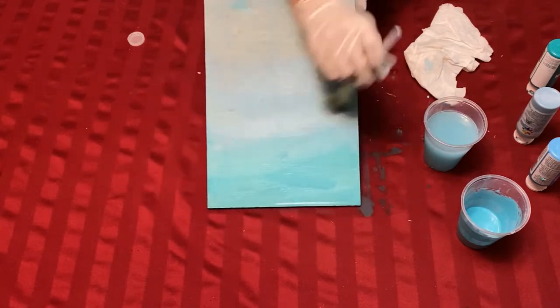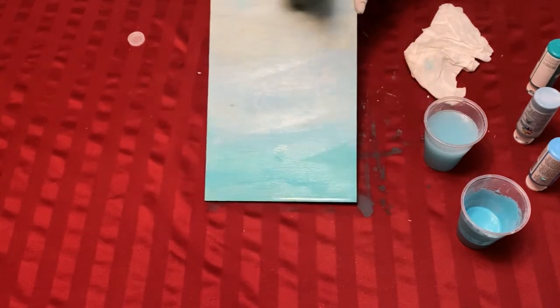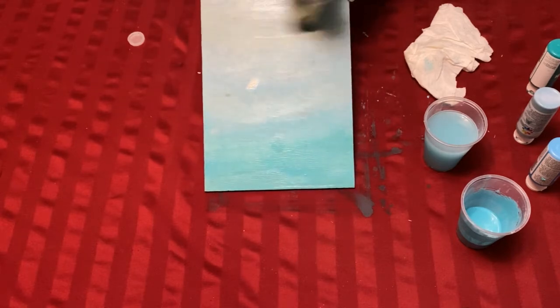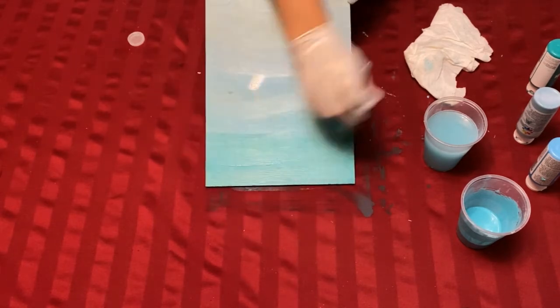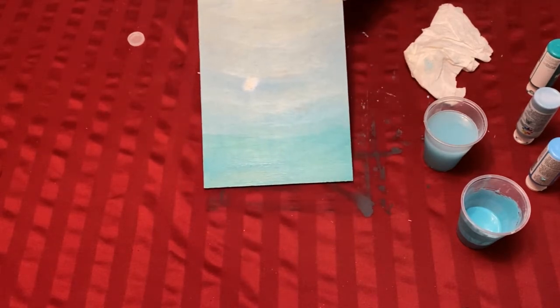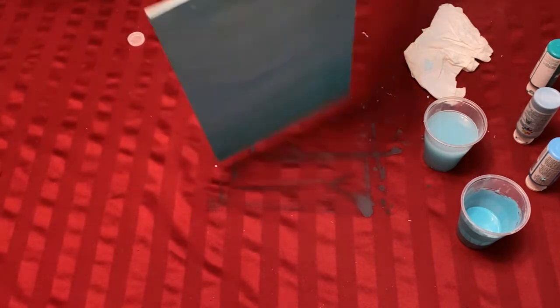Working from the bottom, start blending up with just water. So the water is actually what's going to give you that ombre bowl blend.